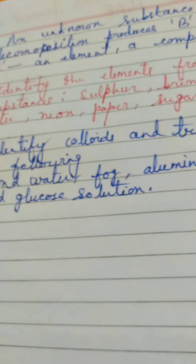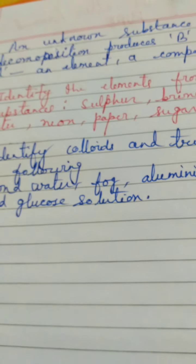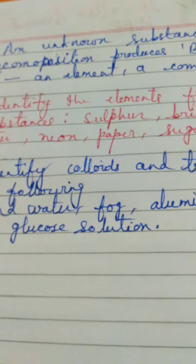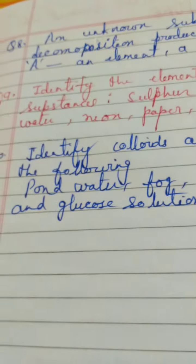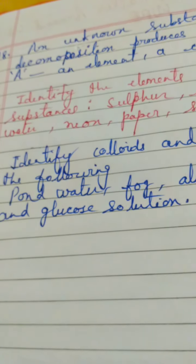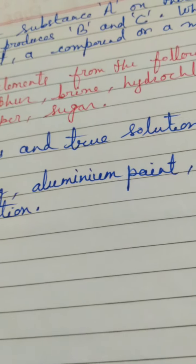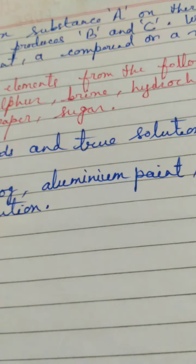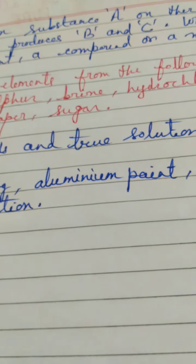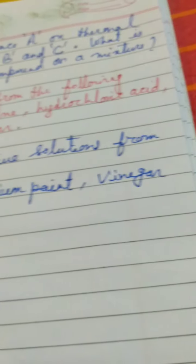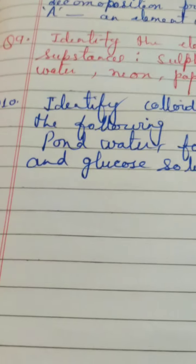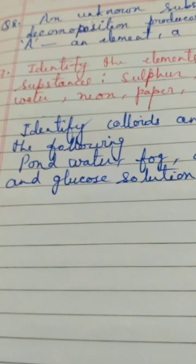Colloid will be your fog. Fog is a colloidal mixture. It is also called aerosol, which is a mixture of air with condensed water particle. Aluminium paint. Paints are always a colloidal mixture. They are emulsions type of colloid. Vinegar is a true solution. And glucose solution is also a true solution.